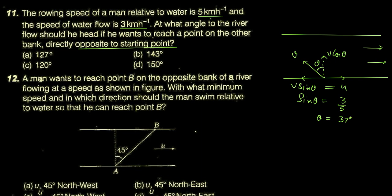37 degree تو ہے vertical direction سے۔ تو river flow کی direction سے کتنا angle ہوگا؟ 90 + 37 = 127 degree۔ تو آپ کا answer بنے گا 127 degree۔